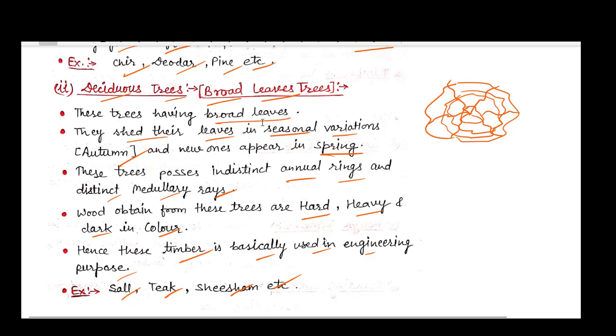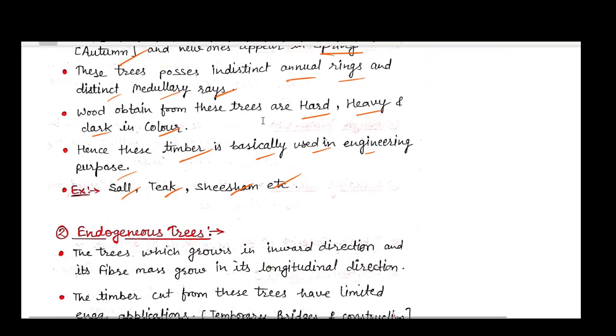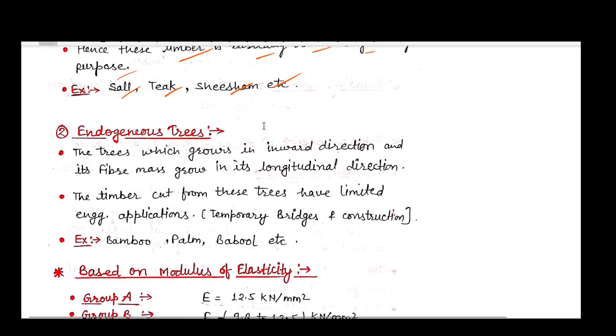These timbers are generally costly. The second type of trees is endogenous trees. Endogenous means growth is in an inward direction, opposite to exogenous trees, and its fiber mass growth is in a longitudinal direction. Timber cut from these trees has limited engineering application and is used for temporary structures like temporary bridges. Examples are bamboo, palm, babol, etc. These trees are generally light in weight.